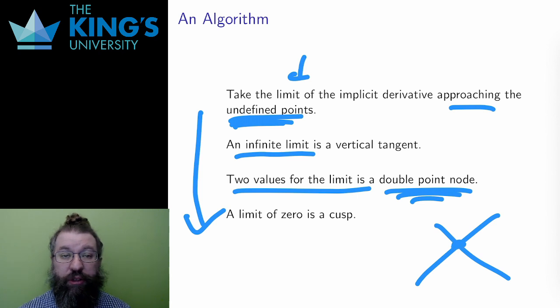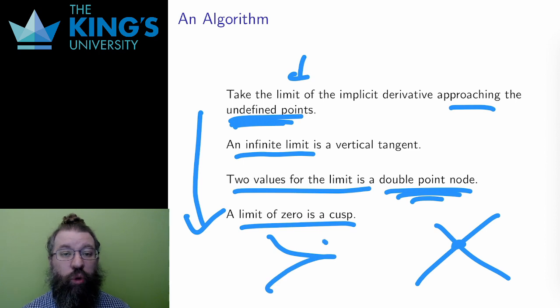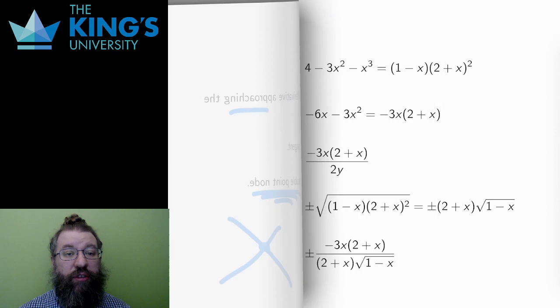And finally, if the limit is zero, there is a cusp. The flattening of the line near an undefined point indicates a sharp corner, which is a cusp. And that's the classification algorithm.